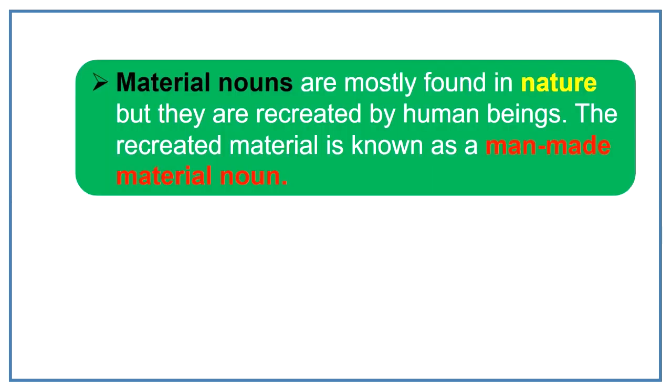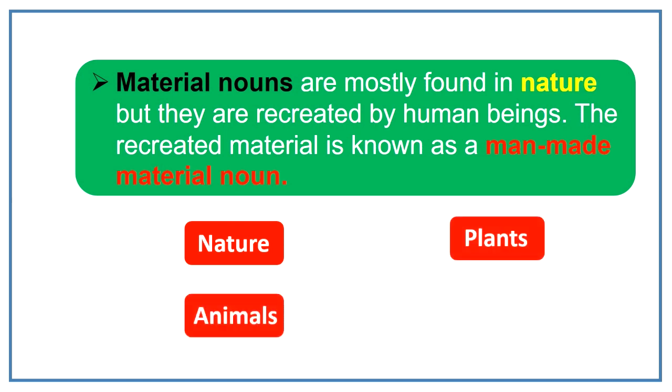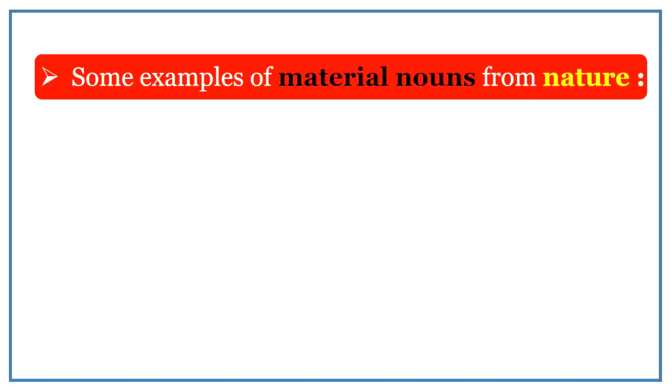Material nouns are mostly found in nature but they are recreated by human beings. The recreated material is known as man-made material noun. We get material nouns from nature. Some we get from plants, from animals and some are man-made.